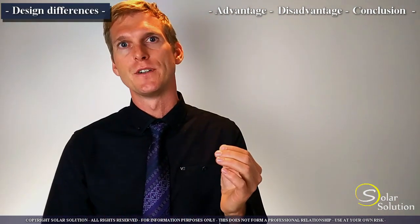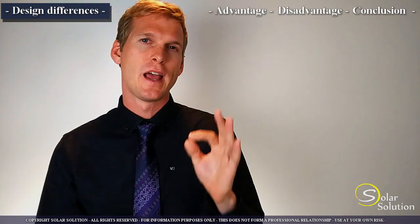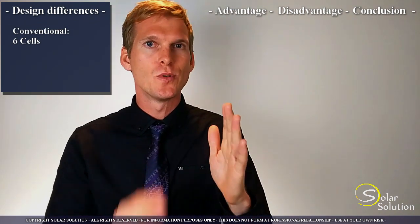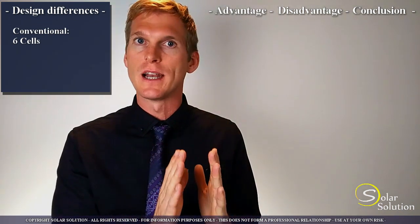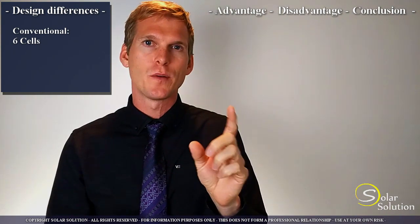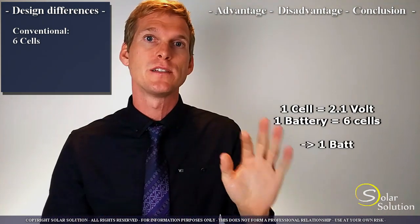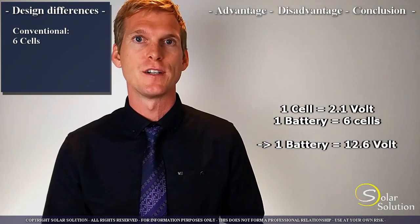So let's look at the structural difference between the two kinds of batteries. A lead acid conventional battery consists of six identical cells. Each cell has two lead plates that are submerged into an electrolyte and this one cell produces 2.1 volts. Then if you place the six of them in series you get 12.6 volts for a conventional battery.